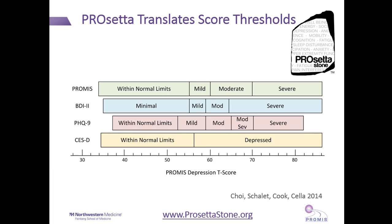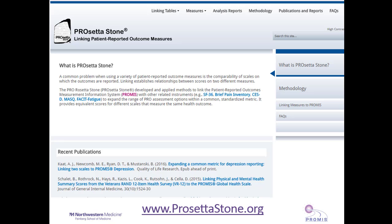You can also compare thresholds between measures. Here, I have transformed scores from three widely used depression measures using Prosetta tables so that they are all on the PROMIS metric. I can compare the thresholds used to categorize the severity of depressive symptoms across the four measures.